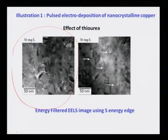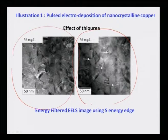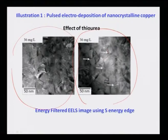To demonstrate this, energy-filter imaging using EELS was employed. The left side of the image shows a normal bright-field image, while the right side is taken using the sulfur energy edge — meaning electrons that lost energy corresponding to the sulfur edge in EELS were used to form the image. Bright lines at the grain boundaries signify the presence of sulfur, which is the distinct element in thiourea, confirming that thiourea molecules sit at the periphery of the copper grains.